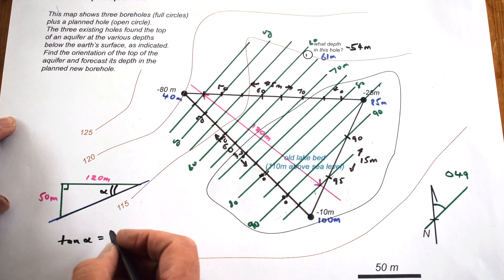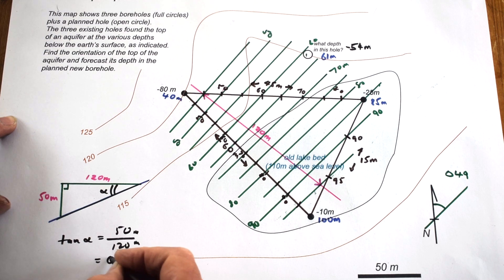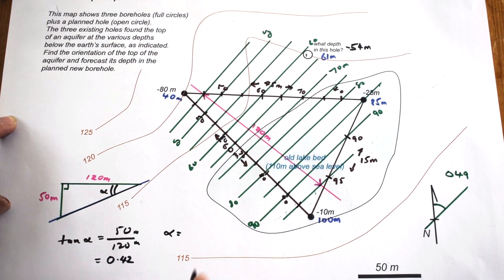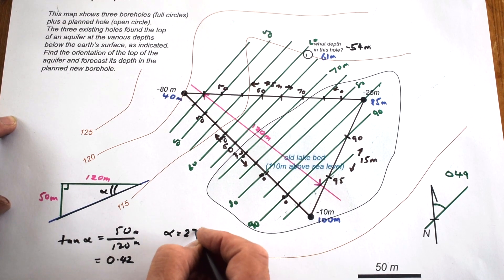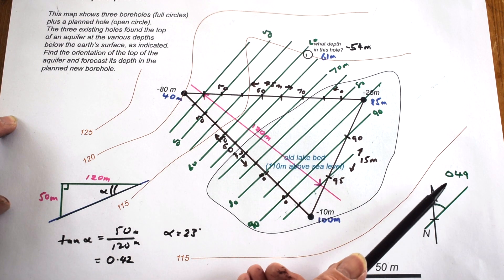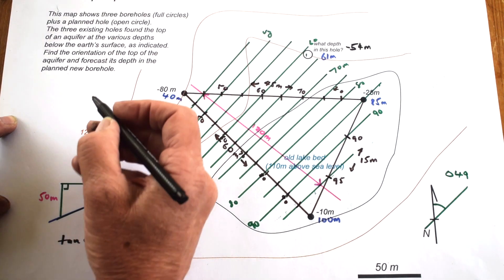It's going to be tan alpha equals 50 over 120 meters, and that is 0.42. So we just need to look up the inverse tan of 0.42, so alpha is 23 degrees. That's the dip, so we have our strike of 049 and a dip of 23.